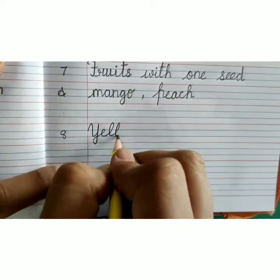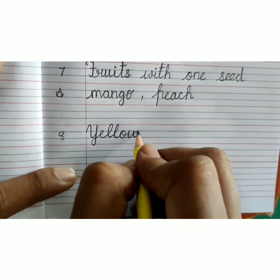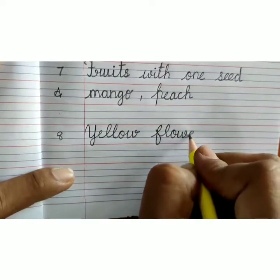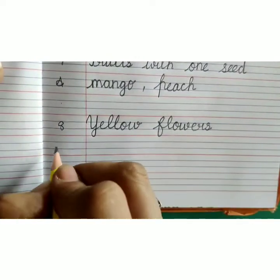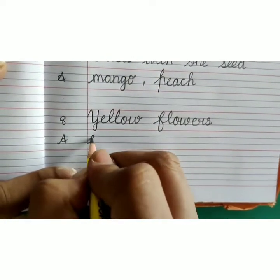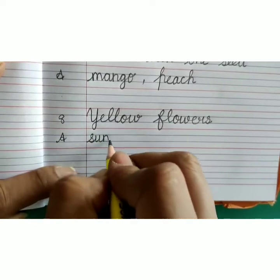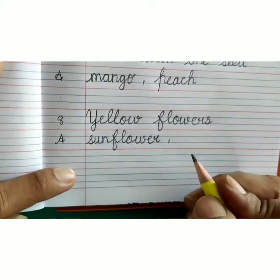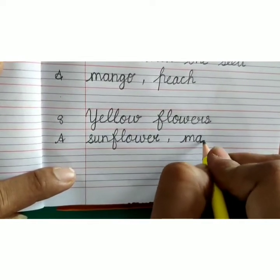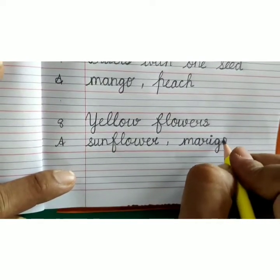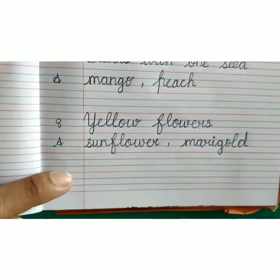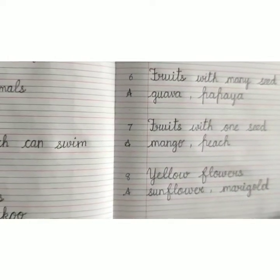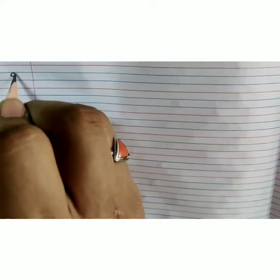Capital Y-E-L-L-O-W, yellow, F-L-O-W-E-R-S, yellow flowers. Answer: S-U-N-F-L-O-W-E-R, sunflower, comma, M-A-R-I-G-O-L-D, marigold, sunflower, marigold. Now write number 9.